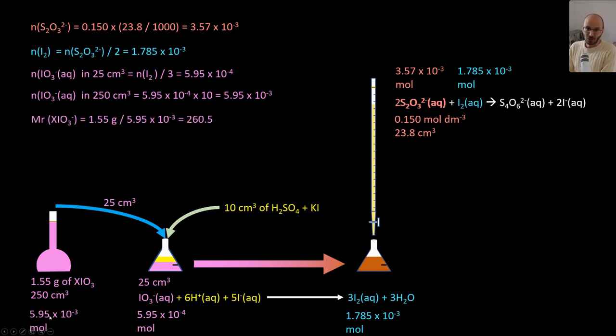Therefore, now you have the grams, you have the moles. If you divide grams by moles, you get the Mr. You can work out the Mr of iodate, and therefore the Mr of X is going to be 85.6.